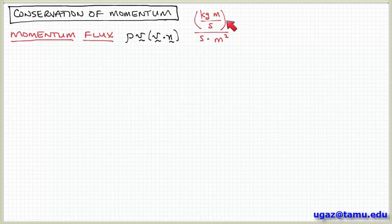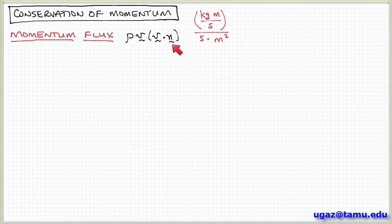Remember, momentum is mass times velocity, mv. So we have kilogram meters per second per area per time. This term gives us an expression for the momentum carried into and out of the control volume by flow.